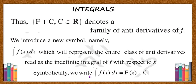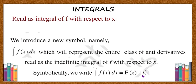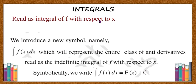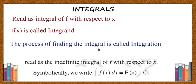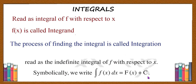Symbolically, we write the integration of f of x dx is equal to F of x plus c, where c is called the arbitrary constant. Read it as the integral of f with respect to x. Here, f of x is called the integrand — remember this term, f of x is called the integrand. The process of finding the integral is called integration. A real number c is considered as a constant function and is called the arbitrary constant.